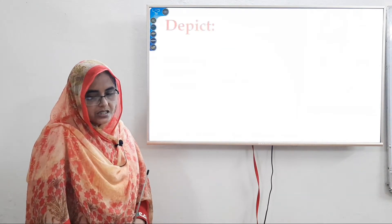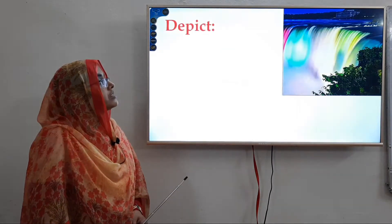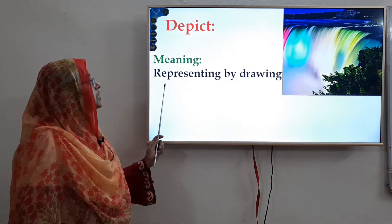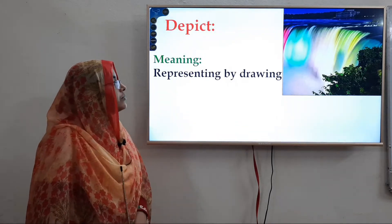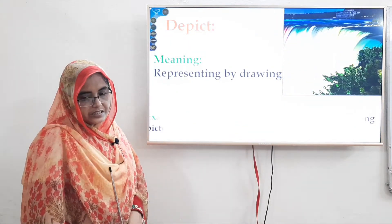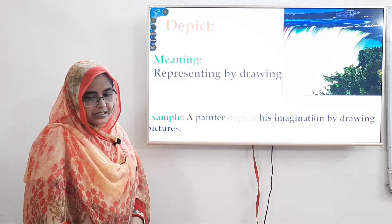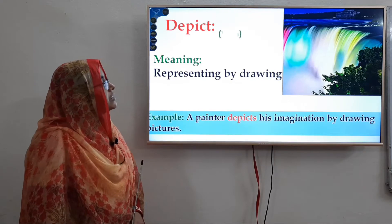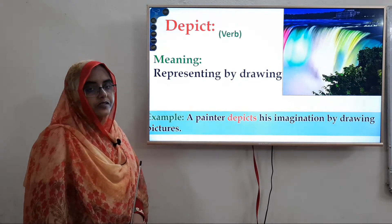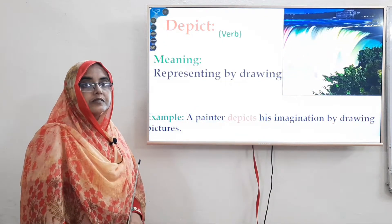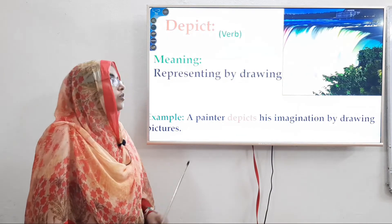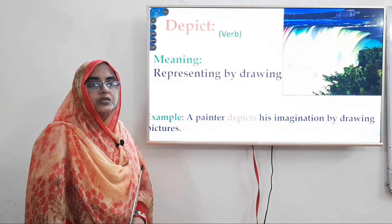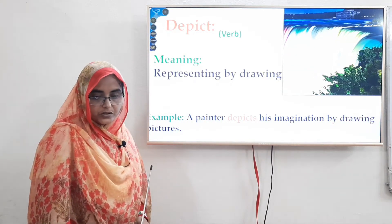Depict — drawing of a painter that is depicted in a picture. The meaning is representing by drawing. Here is a sentence: A painter depicts his imagination by drawing pictures. Depict is a verb form — a verb is an action word, and in this sentence 'depict' shows the action. So it is a verb.